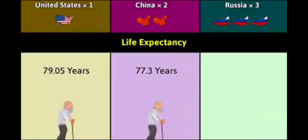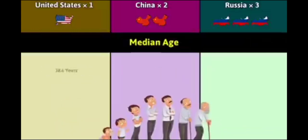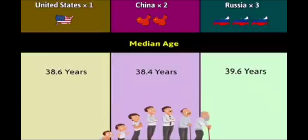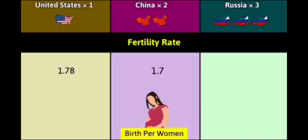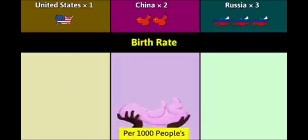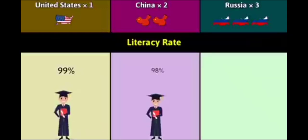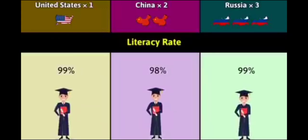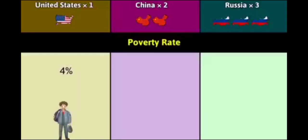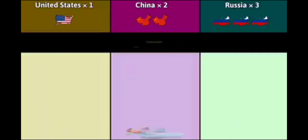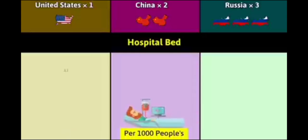Life expectancy: 79.05 years, 77.3 years, 72.8 years. Median age: 38.6 years, 38.4 years, 39.6 years. Fertility rate: 1.78, 1.71, 1.8. Birth rate: 12.12, 10.9, 11.6. Death rate: 9.07, 7.6, 13. Literacy rate: 99%, 98%, 99%.